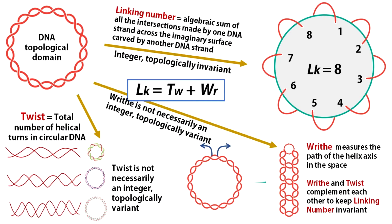In our video on DNA topology, we discussed that a DNA segment constrained in such a way that its ends cannot rotate freely is called a topological domain. Topology of such a DNA segment can be efficiently described by three parameters: linking number, twist,